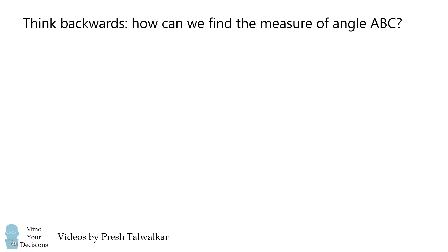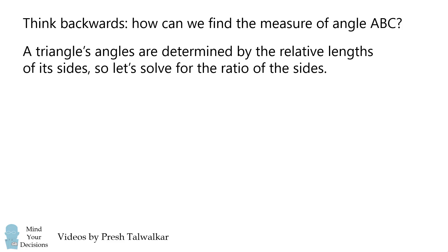So to solve this seemingly impossible problem, we need to think backwards. How can we find the measure of angle ABC? Recall that a triangle's angles are determined by the relative lengths of its sides. So let's solve for the ratio of the sides.